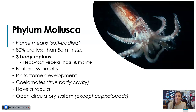These organisms have bilateral symmetry and protostome development. In addition, we are seeing true coelomates, so they have a true body cavity. They also have something kind of unique to them called a radula, which helps them scrape food, and that structure is modified in some of your cephalopods. They also have an open circulatory system, but cephalopods are a little bit different.